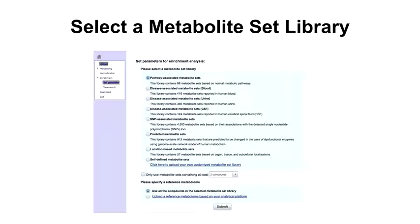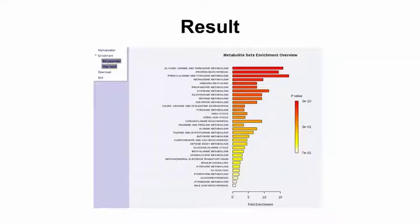From here you can select a metabolite set library from which to compare. There might be pathway-associated metabolites, disease-associated metabolites, SNP-associated metabolites — single nucleotide polymorphisms — predicted metabolite sets, or location-based metabolites, since certain metabolites are found in certain tissues or biofluids. You can also create your own metabolite set — for example, one you know is important in cancer or cachexia. There are others compiled for this particular application as well.